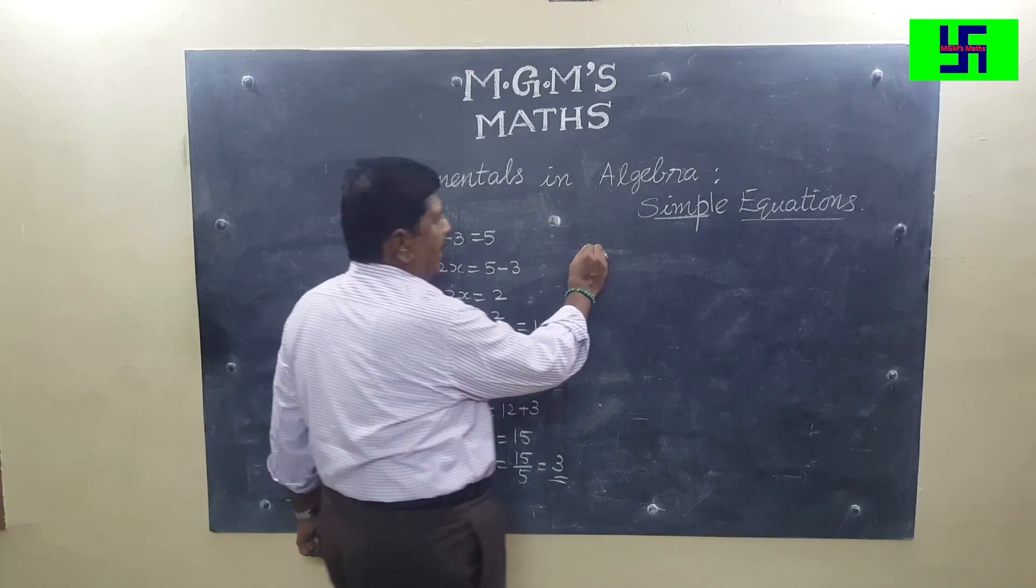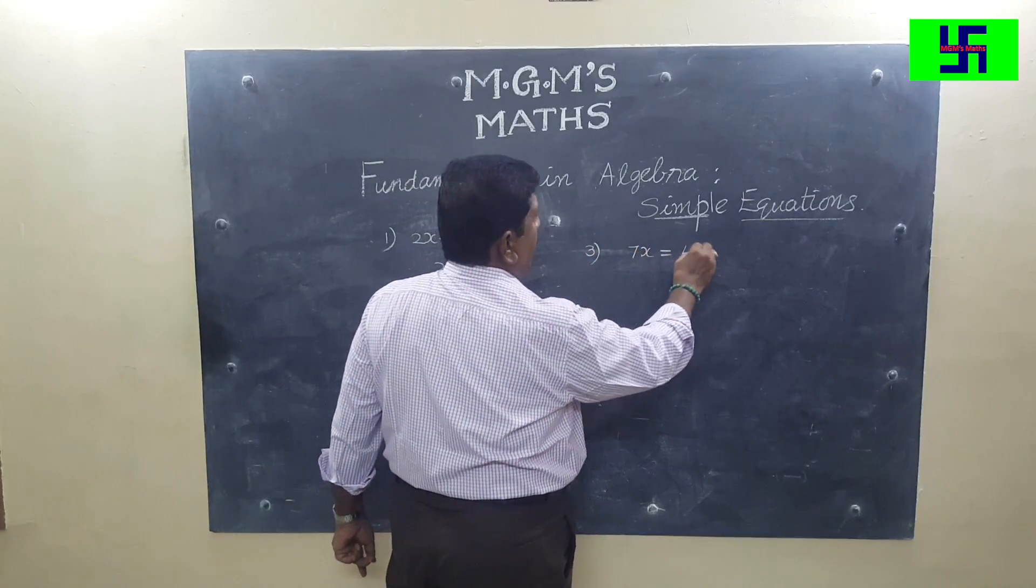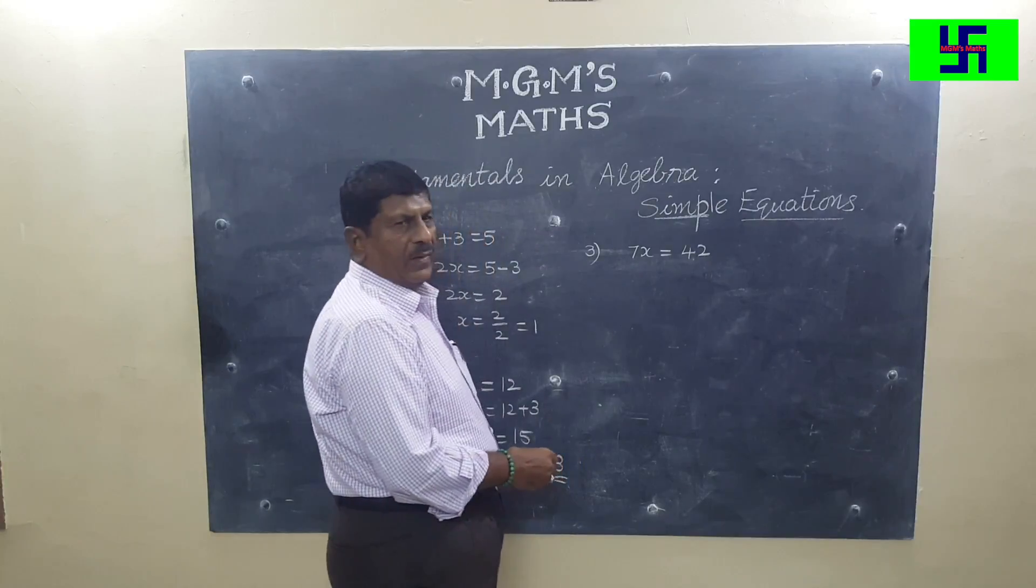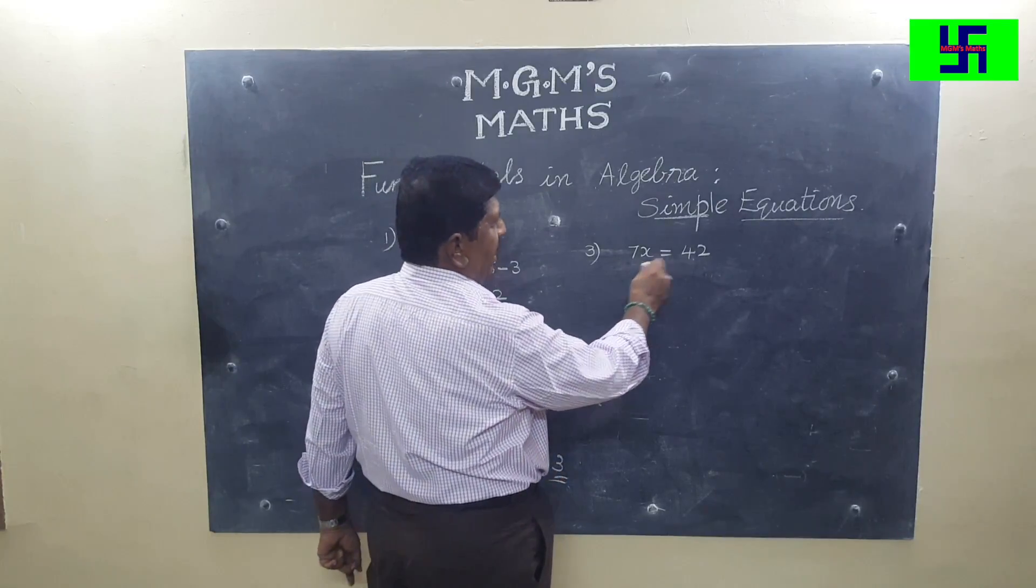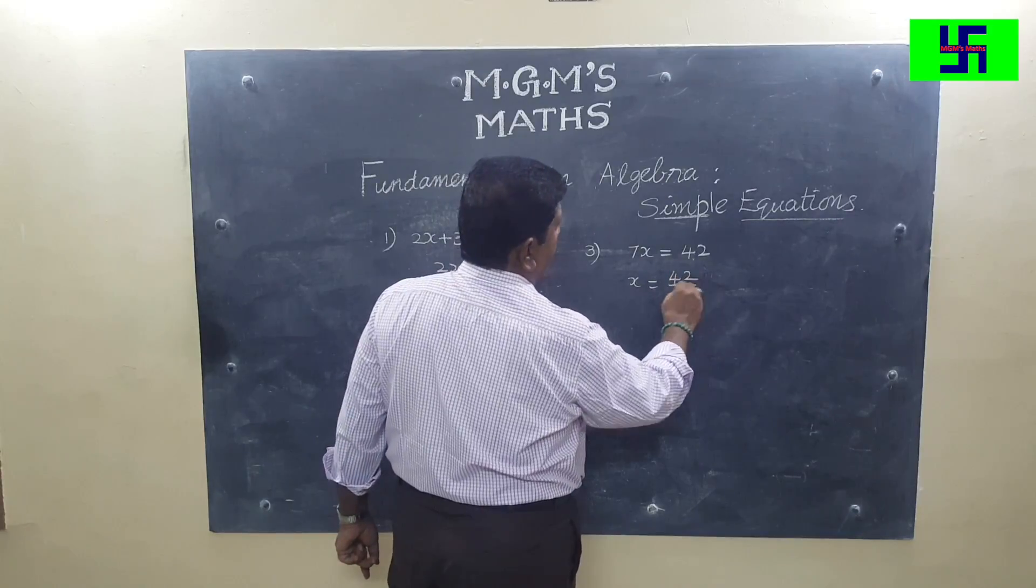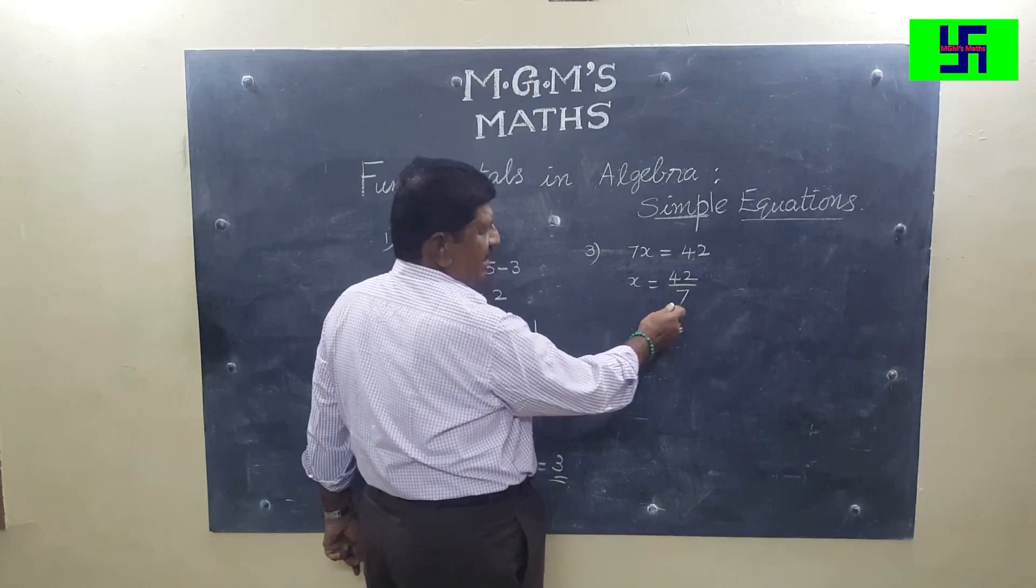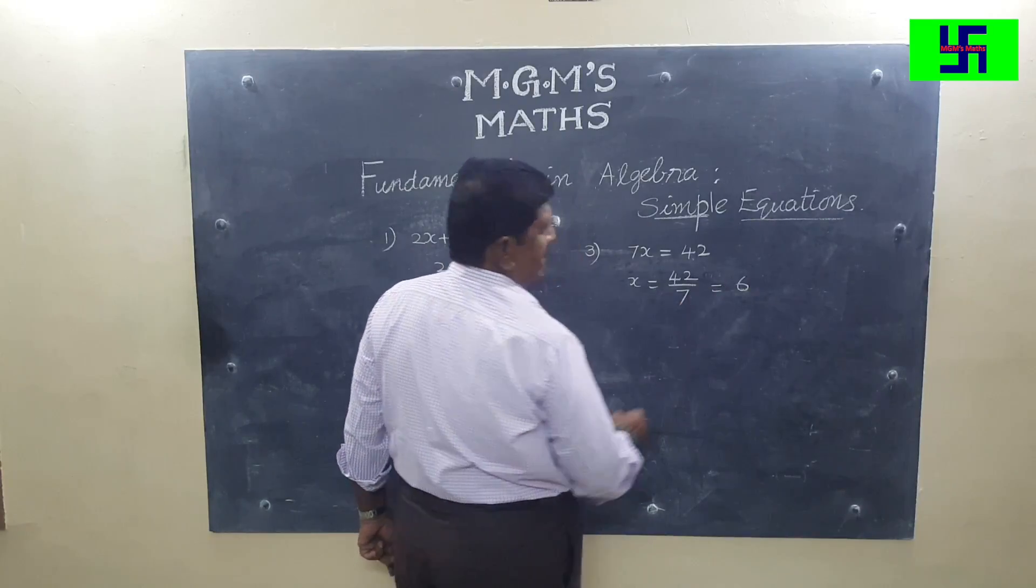Suppose you have a problem like this: 7x is equal to 42. Here 7 into x is 42, so x is equal to 42 upon 7. Multiplication becomes division, so x becomes 6.